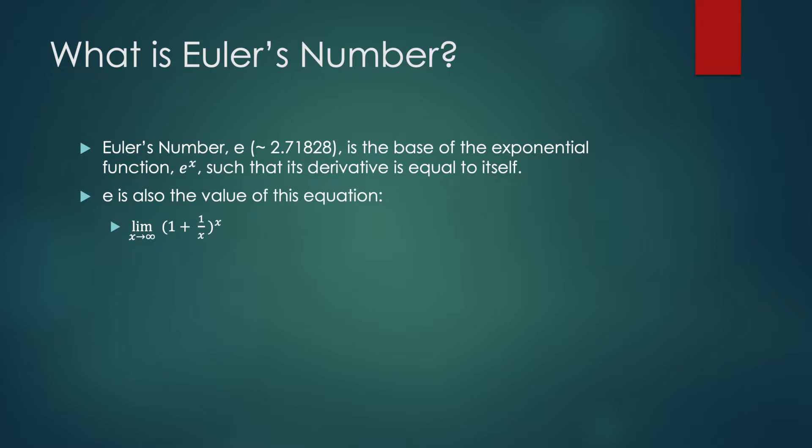When that base is e, then the constant of proportionality is 1 and the derivative of e to the X is in fact itself. I can link a video by 3Blue1Brown in the description that details this really clearly. Another definition you'll see of e quite often is the equation for continuously compounding a 100% interest rate, and that's the one in the second bullet point.